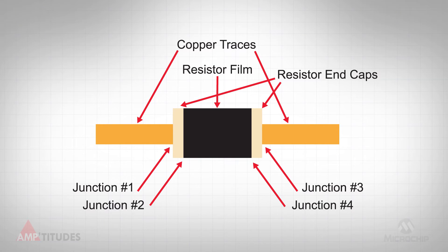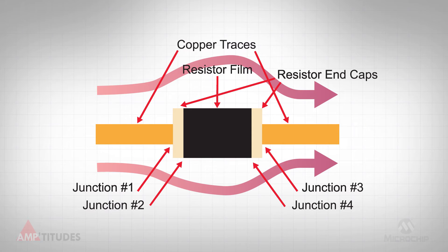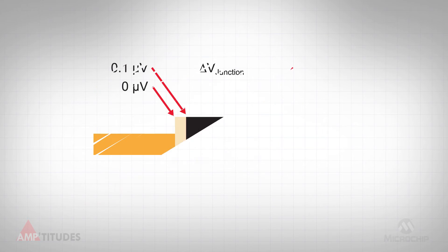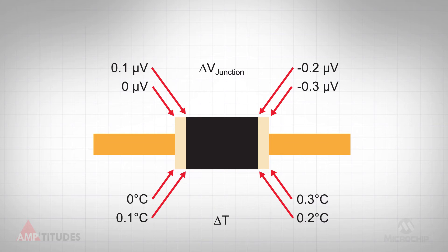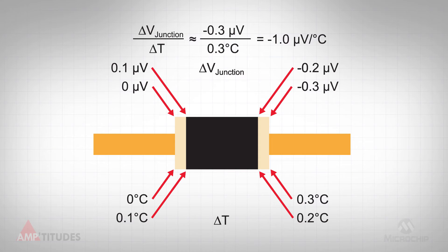This illustration shows a typical copper trace with a surface mount resistor. For this case, let's assume the temperature gradient is parallel to the trace. The thermal junction voltage effect is roughly proportional to the difference in temperature between the ends of the resistor. This effect is a function of resistor size, the types of metals in contact, and the severity of the temperature gradient. In this example, we assume a temperature gradient of 0.3 degrees C across the resistor, which results in a temperature drift around 1 microvolt per degree C change, much higher than the drift of a typical zero drift amplifier.